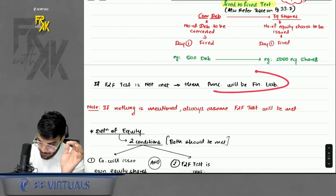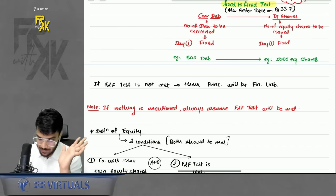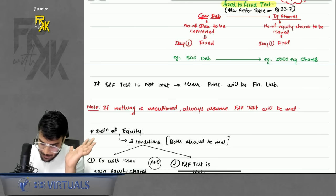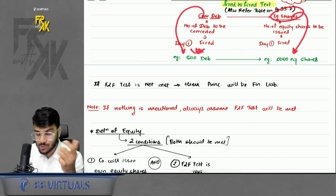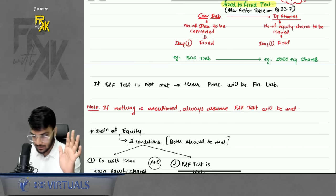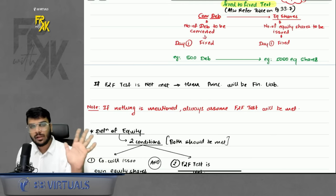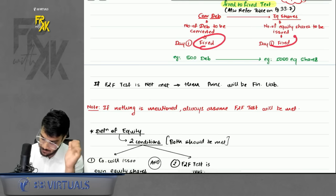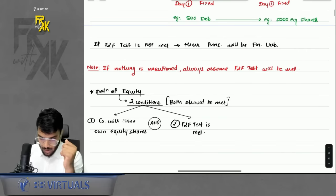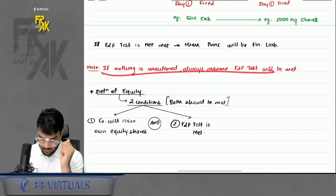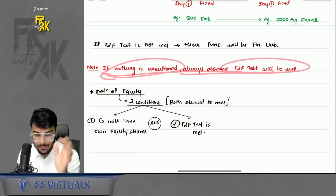If the fixed-to-fixed test is not met — for example, if the number of debentures is variable while equity shares are fixed — the element will be a financial liability. If any element is variable, it is a financial liability. If both are fixed, it is equity. If nothing is mentioned in the question, always assume the fixed-to-fixed test is met.